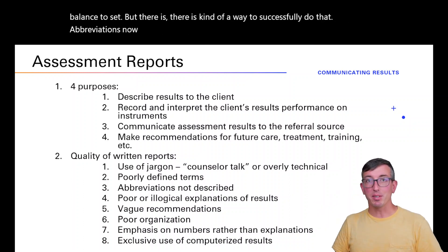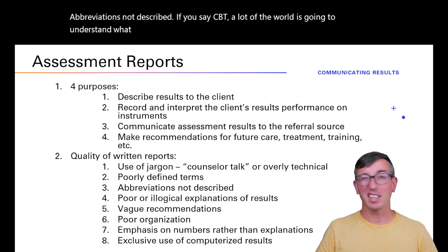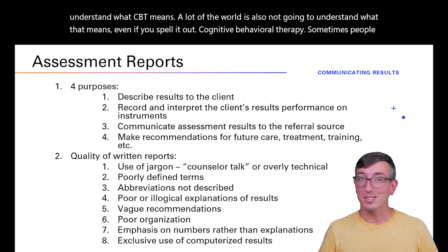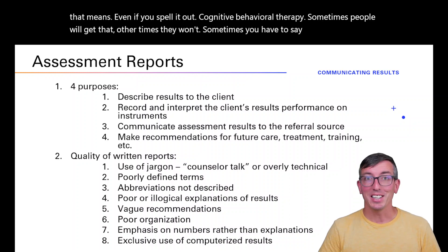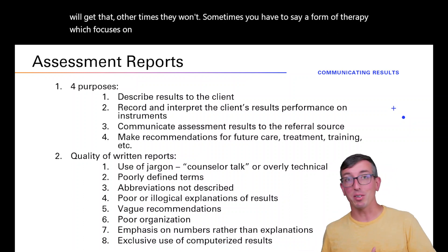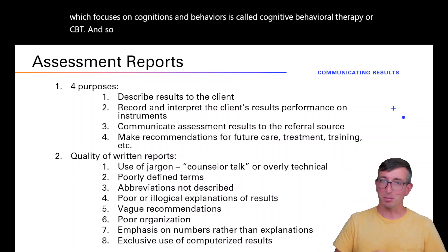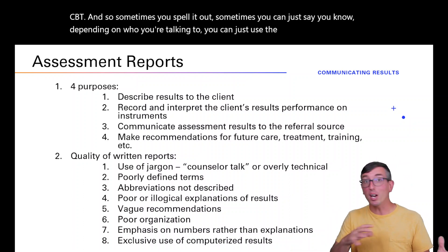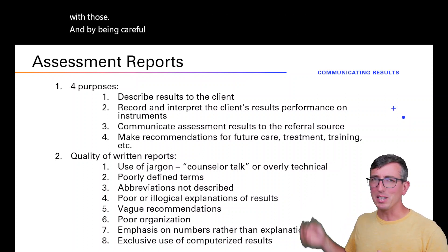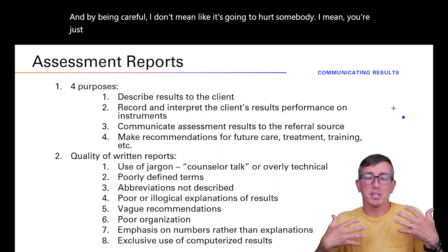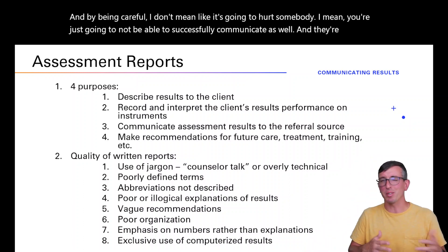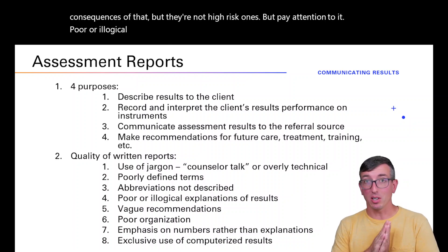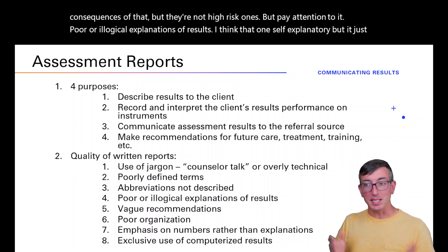Poor or illogical explanations of results is another issue — it takes practice. Vague recommendations are interesting: I just went to a training with clinical supervisors who said when developing treatment plans, you want to be as vague as possible in some cases, because the actual things you do in counseling aren't necessarily what you write on papers. For instance, writing 'engage in cognitive behavioral therapy for six weeks with reevaluation' gives flexibility — CBT can look very different depending on setting.